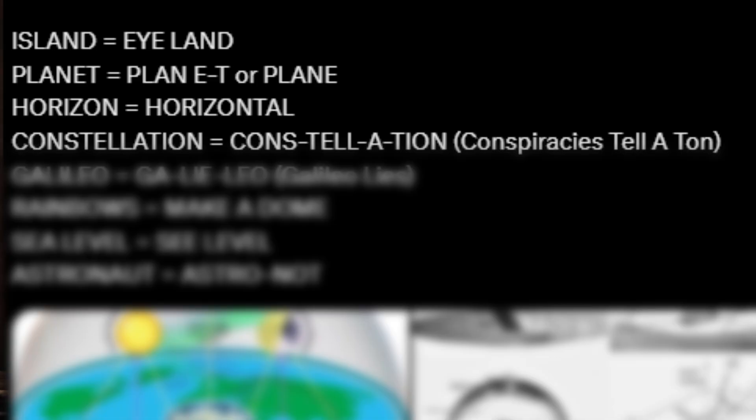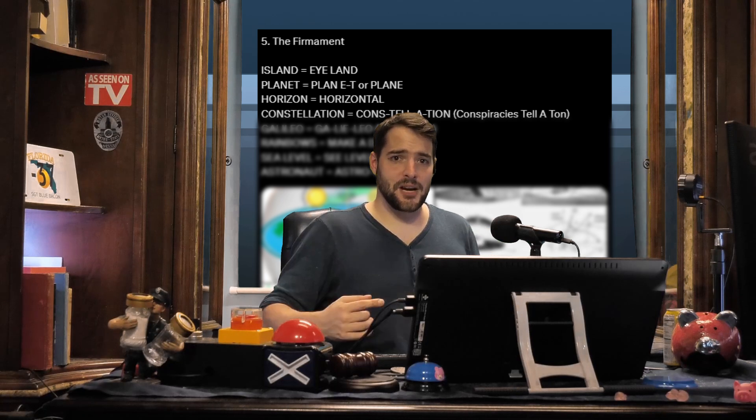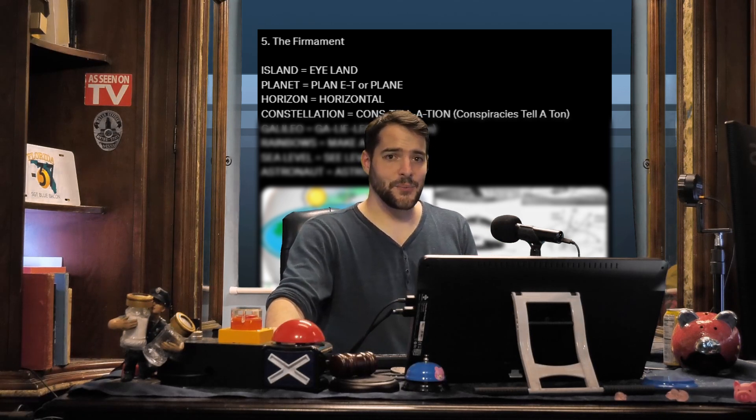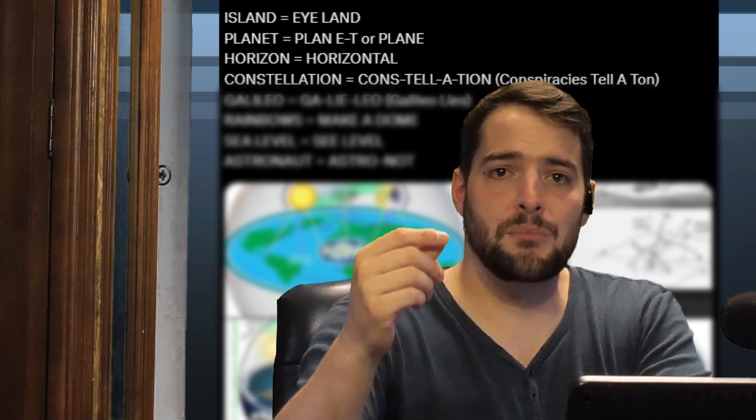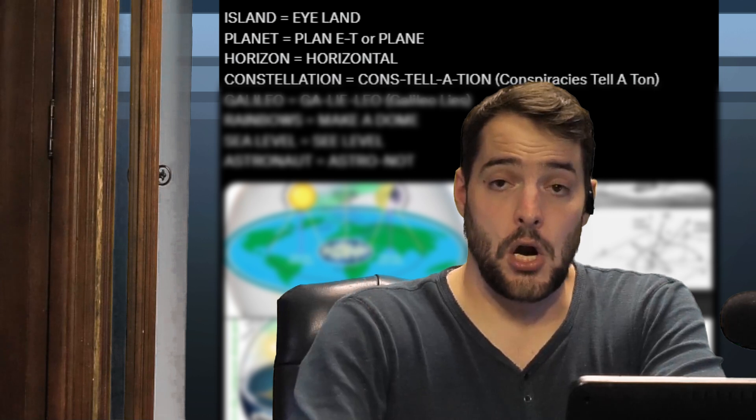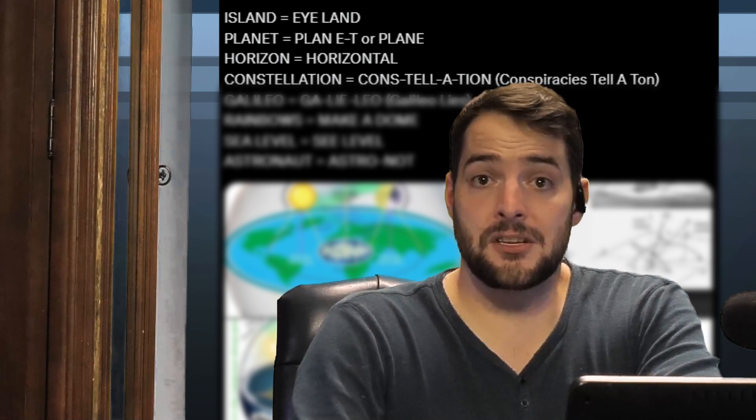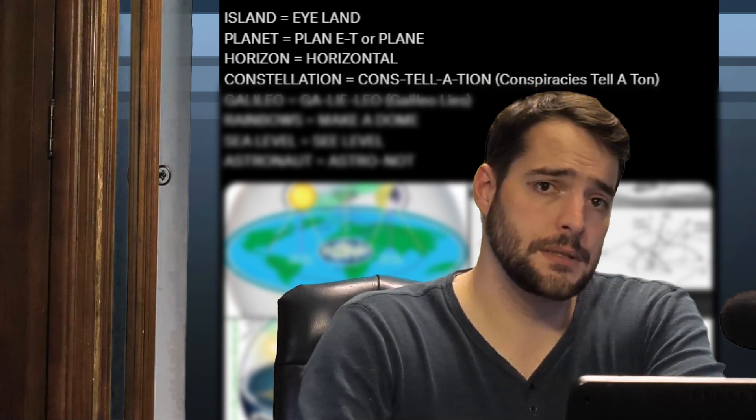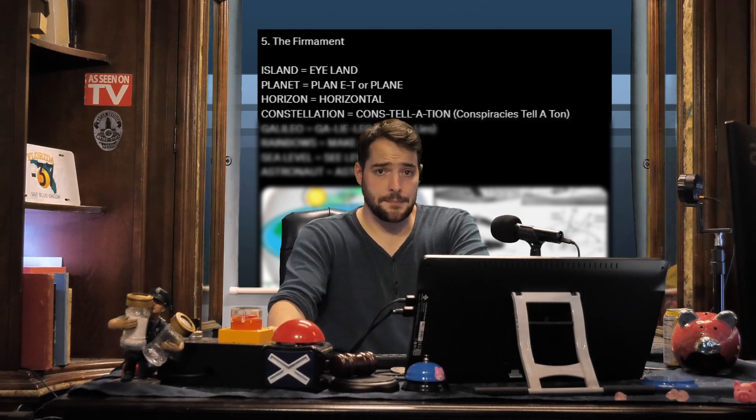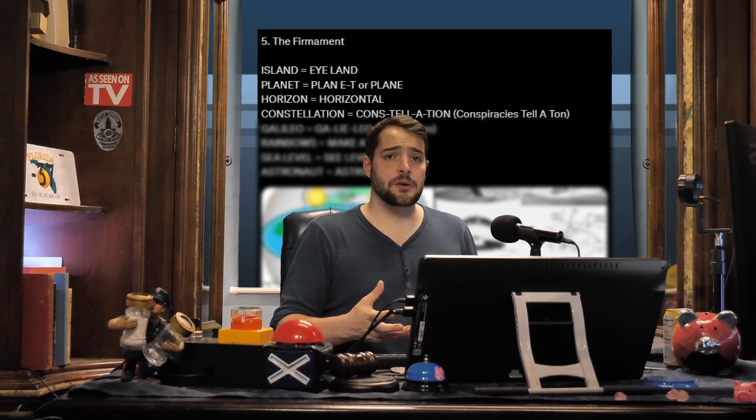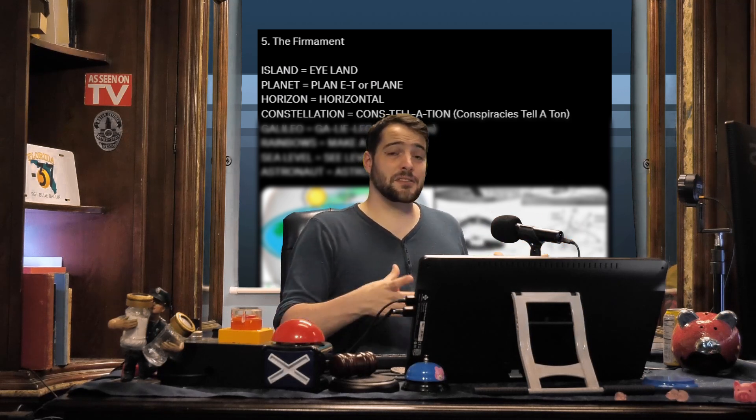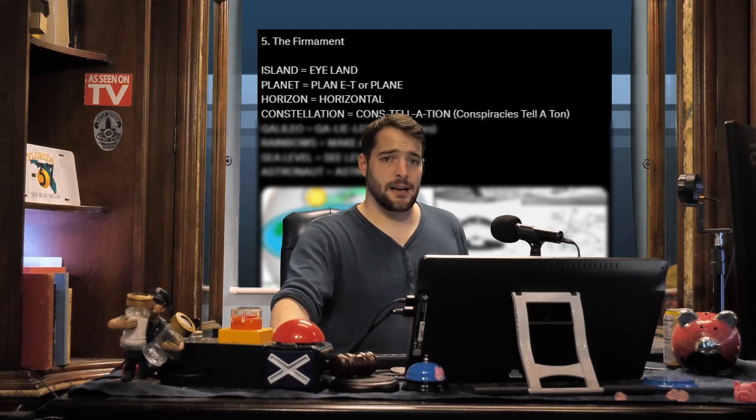Constellation equals constellation, or conspiracy to tell a ton. No. First, where'd the I go? You removed a letter to get ton. What's the limit to that? If someone said the Earth is not flat, do I get to remove a few letters until their statement is the Earth is flat? Or am I limited to one letter per word? Who sets the rules? The word constellation actually comes from the Latin stella. The prefix con means together, the suffix tion means the result of. So constellation breaks down to the result of stars together, or something similar to that. I'm no entomologist. That's the study of bugs.